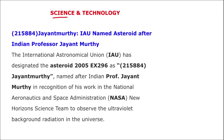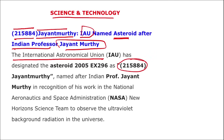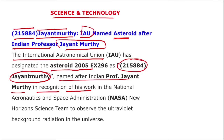Next, science and technology: the International Astronomical Union (IAU) has named an asteroid after Indian professor Jayant Murthy. The asteroid — 2005 EX296, designated as 215884 Jayant Murthy — has been named in recognition of his work at NASA.